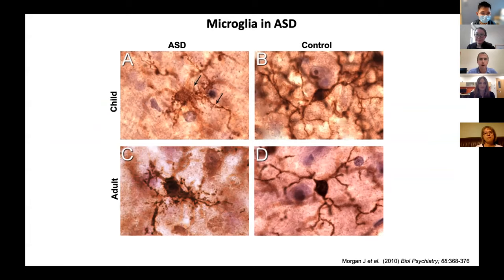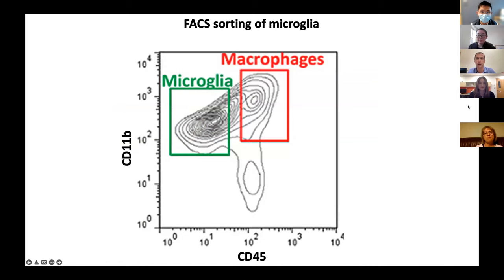The more classical role in which people think of microglia is their response to brain injury or disease. There are alterations in microglia in a whole variety of disorders and degenerative diseases, as evidenced in postmortem motor cortex from individuals diagnosed with autism spectrum disorder compared to neurotypical controls. Microglia are obviously an important and growing area of study. One of the most common methods to isolate microglia is FACS sorting based on the antigens CD11b and CD45.